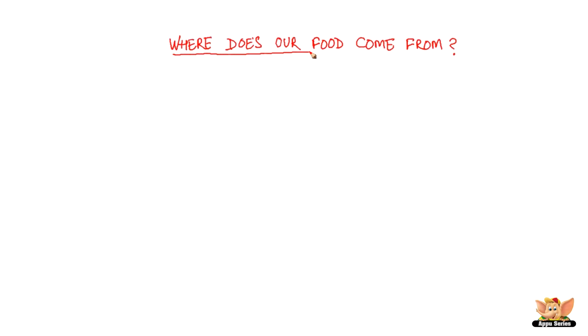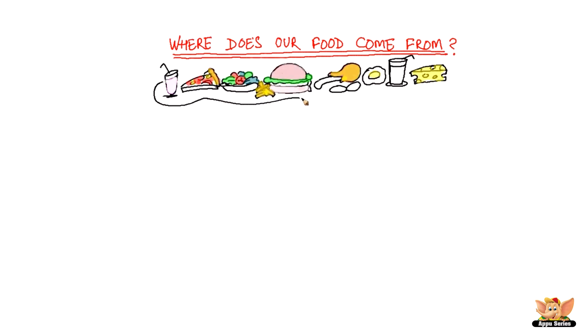Our food varies from time to time and from day to day, but have you wondered where our food comes from? This is what we are going to talk about in this video — where does our food come from? Where do all these ingredients that we use to make our dishes come from? What are the sources of wheat, rice and other grains? All of the food that we eat comes either from plants or animals.